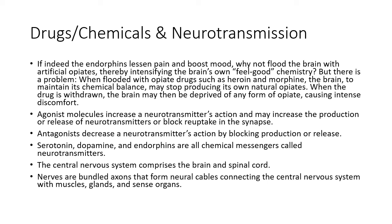Agonist molecules increase neurotransmitter action and may increase the production or release of neurotransmitters or block reuptake in the synapse. Antagonists decrease a neurotransmitter's action by blocking production or release. Serotonin, dopamine, and endorphins are all chemical messengers — they are all neurotransmitters. The central nervous system includes not only the brain but also the spinal cord. Nerves are bundled axons that form neural cables connecting the central nervous system with your muscles, glands, and sense organs.